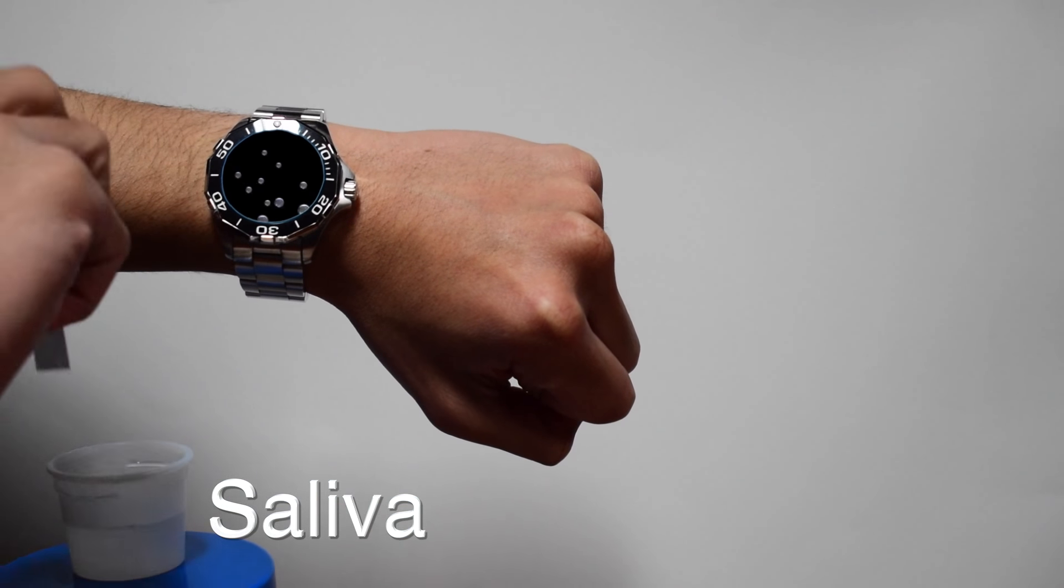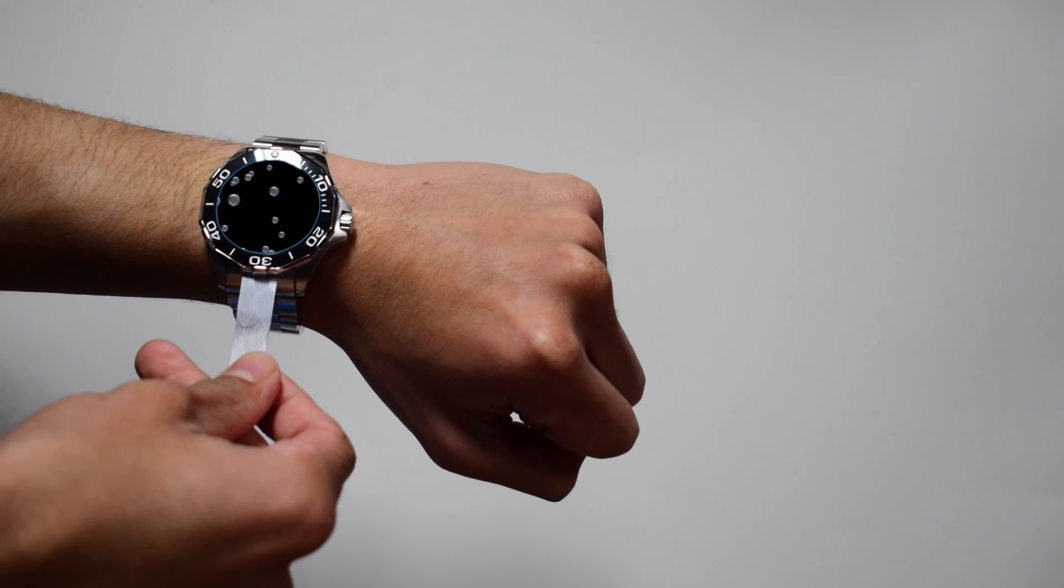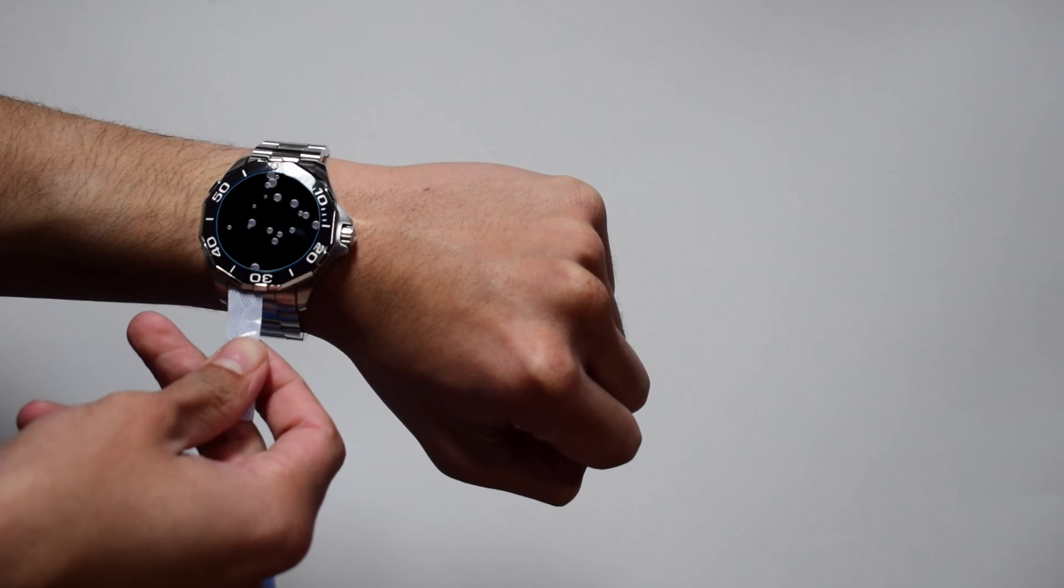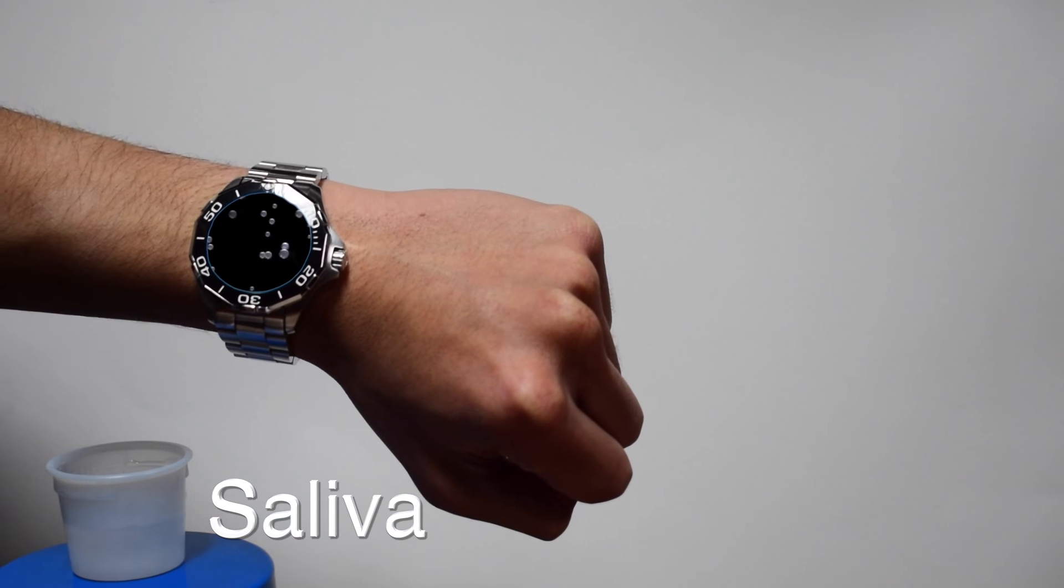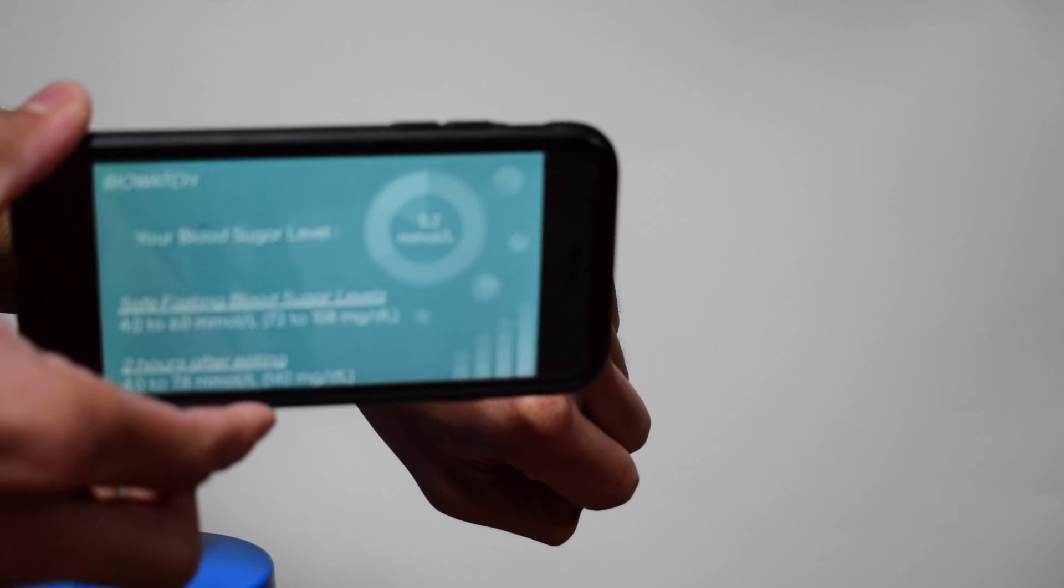Unlike any other smartwatch, the BioWatch can monitor blood sugar and blood glucose levels through the analysis of saliva. After a strip with saliva is inserted into the watch, the results will be sent to the user's smartphone or smart device where they can be seen and then tracked.